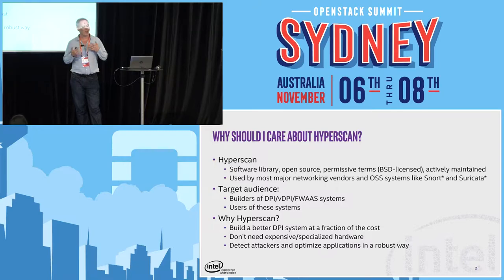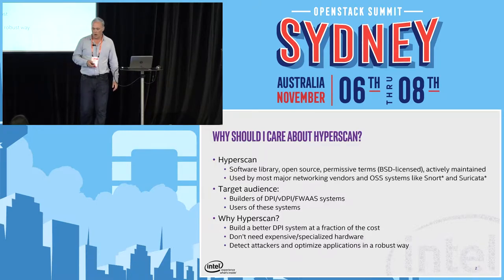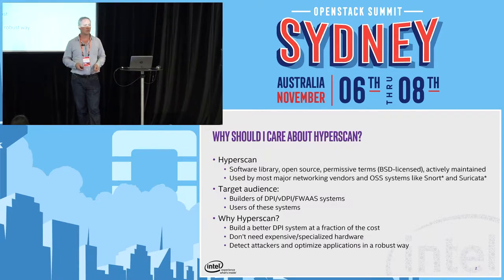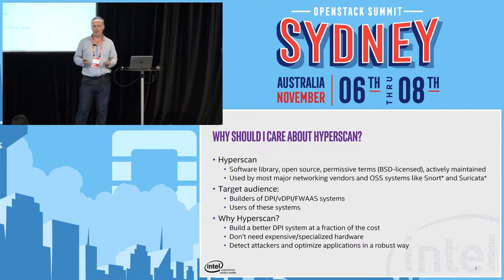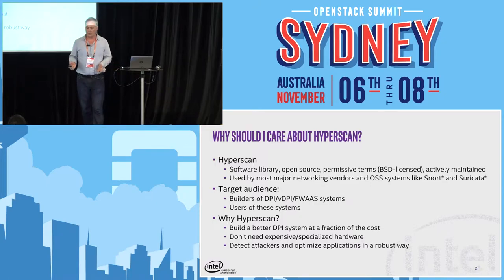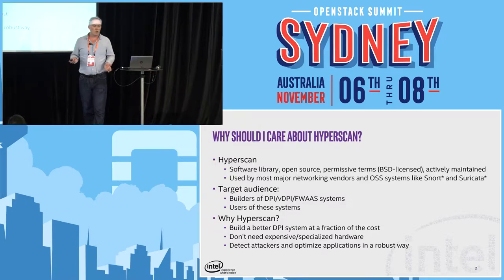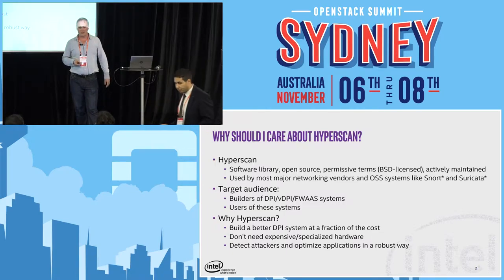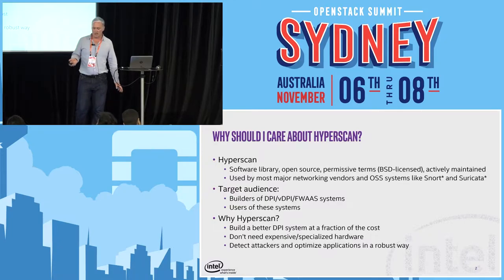We're used in a whole bunch of the major networking vendors. Some have acknowledged that they use us and I can call out names; others I've got to keep to myself. We're also used across a wide variety of open source systems like Snort and Suricata. If you're familiar with open source intrusion prevention or detection systems, those are the systems where we've been initially adopted. The target audience for this talk is that either you're building some sort of DPI solution and want to understand how Hyperscan can make your system faster.